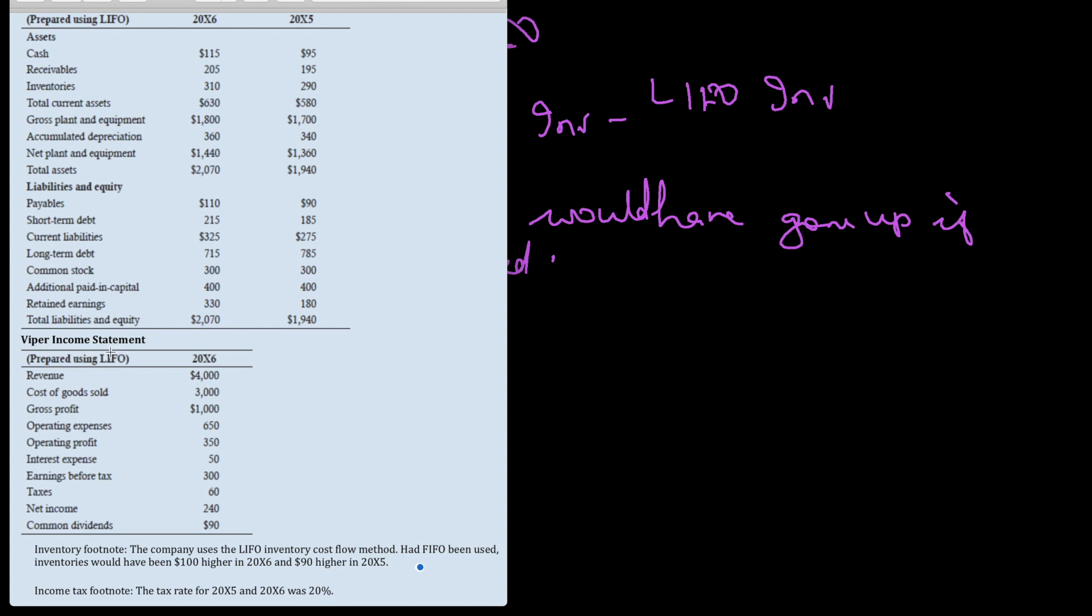Viper income statement prepared using LIFO method for 2006. Revenue is 4000, then cost of goods sold, gross profit, operating expense, operating profit, interest expense, earnings before tax, tax, net income, and common dividends are all given. The footnote says company uses LIFO. Had FIFO been used, inventories would have been 100 higher in 2006 and 90 higher in 2005.